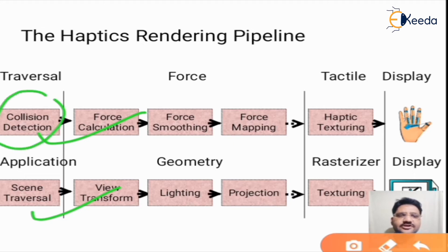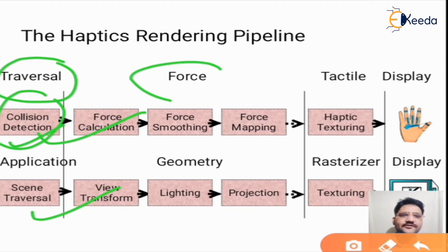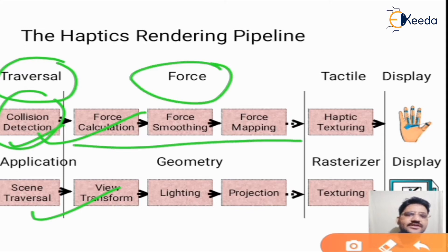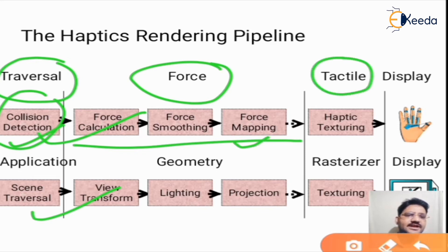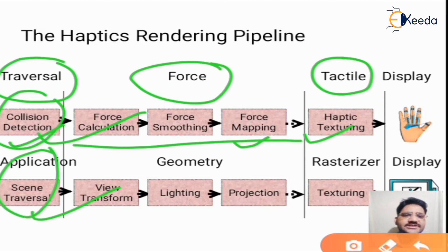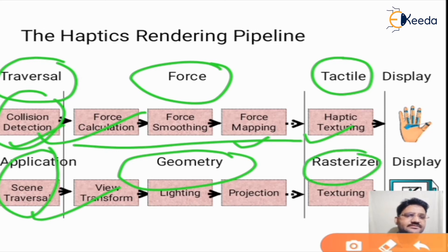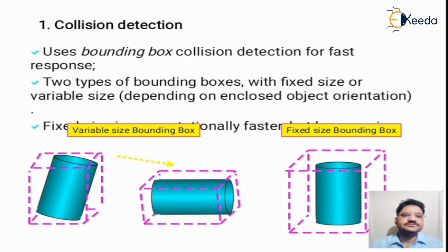Here we can see the similarity of physical modeling stages with haptic rendering stages. The stages of physical modeling consist of collision detection, force calculations, force smoothing, force mapping, and tactile — where we perform haptic texturing. This is similar to the haptic rendering stage applications of geometry and rasterize. Let's see the first component or stage of physical modeling, which is collision detection.